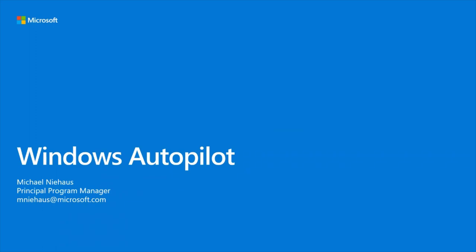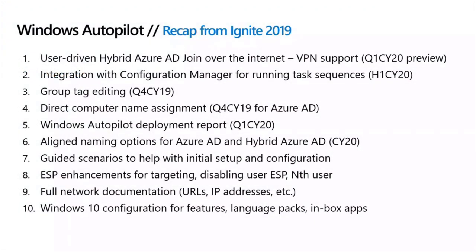So, Windows Autopilot. Before we dive into the main topic — hybrid Azure AD join over the internet using VPN — I wanted to spend a little bit of time doing a quick recap of some of the things we had talked about back at Ignite 2019. That seems like a long time ago, but it was really only about eight months ago. At the time, we had listed 10 items that we were actively working on.